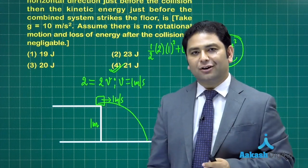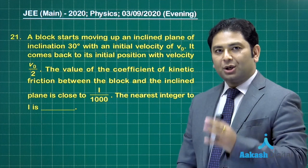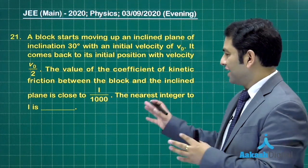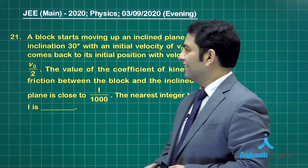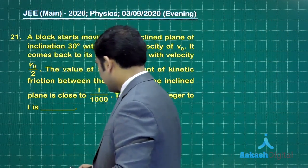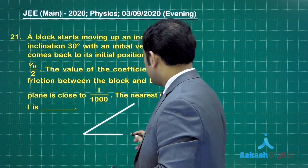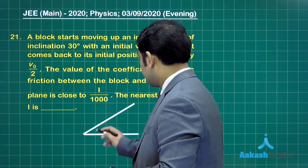Questions 21 to 25 are integer based - you'll not find any option, you need to solve the value. Question number 21 says there's a block that moves up an inclined plane.